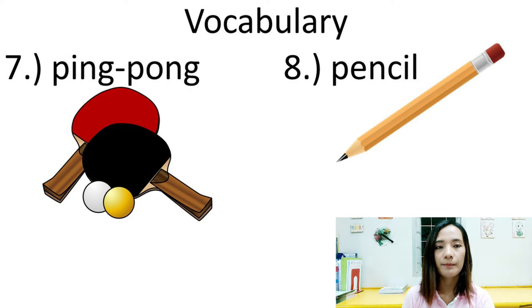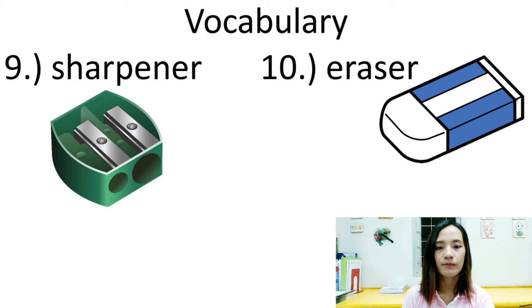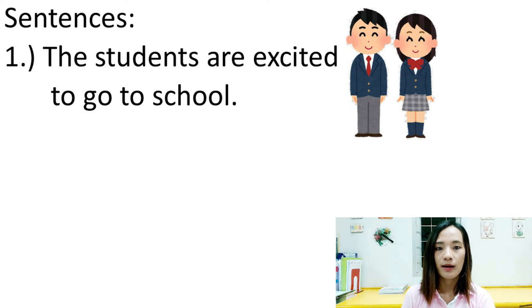Number seven: ping-pong. Number eight: pencil. Number nine: sharpener. Number ten: eraser. Now let's move on to our sentences.